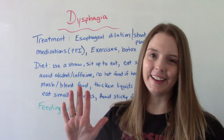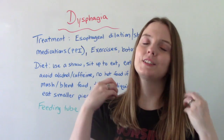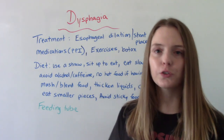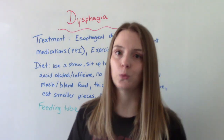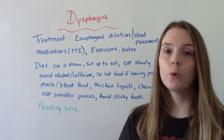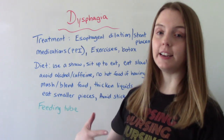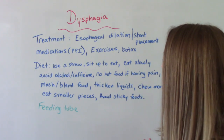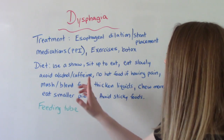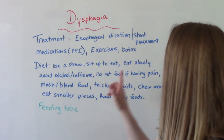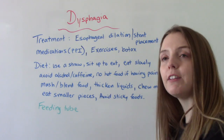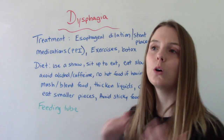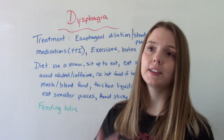The big treatment is, of course, dietary. So lots of helpful hints for patients who are having trouble swallowing: use a straw when drinking liquids, always sit up to eat, don't slouch and don't eat in bed, eat slowly, and avoid alcohol and caffeine. No hot foods, especially if you're having pain with swallowing, because that's one of the symptoms — cold or room temperature foods will help with that.